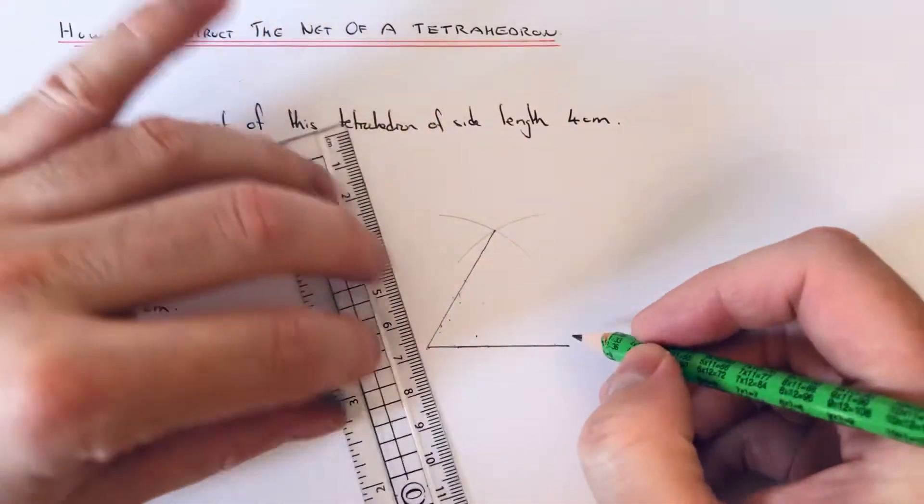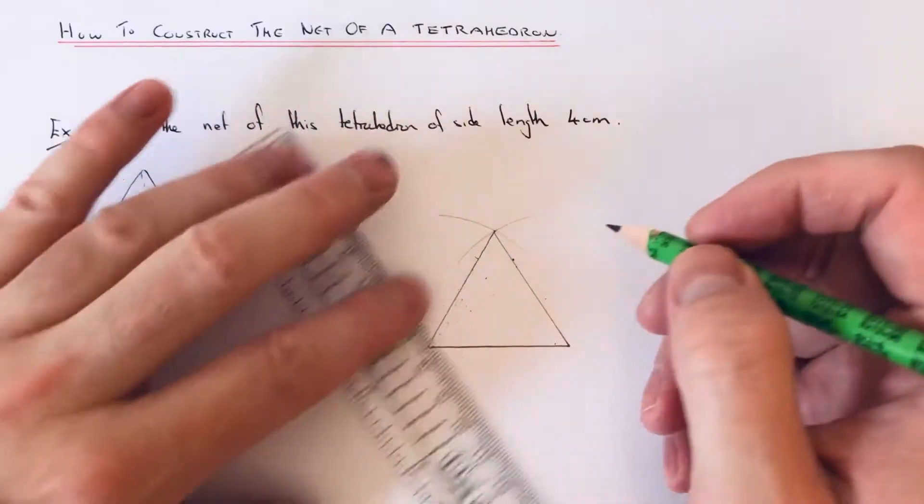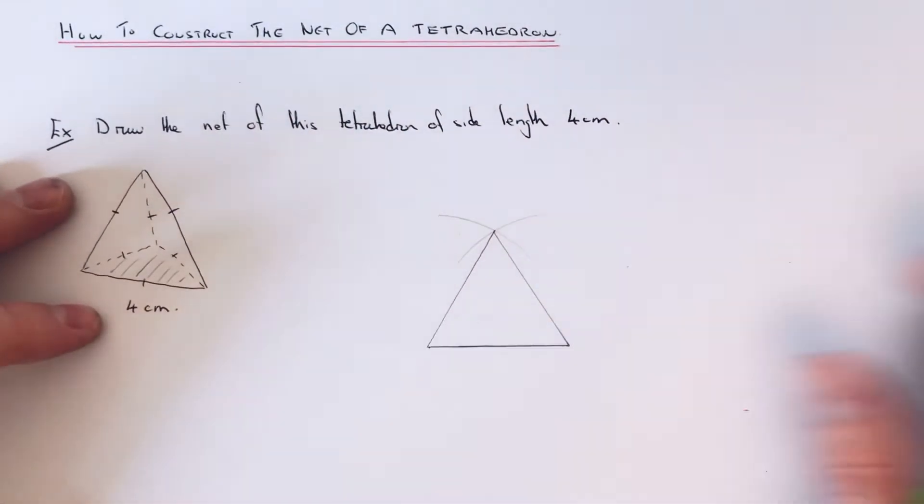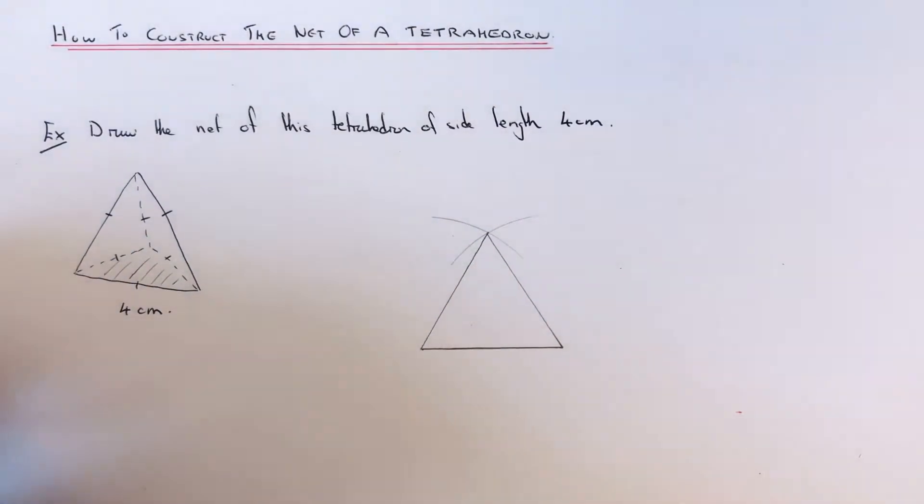And if we draw our final two edges, okay, so that is our first face done. It is an equilateral triangle of side length four centimeters. We just need to do now three more of these from each edge.